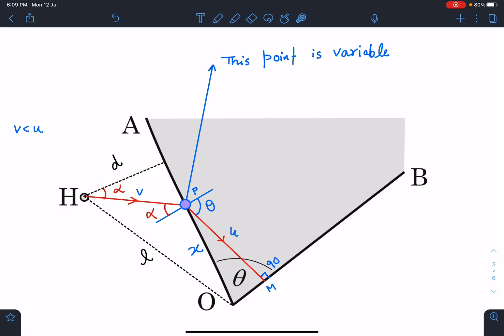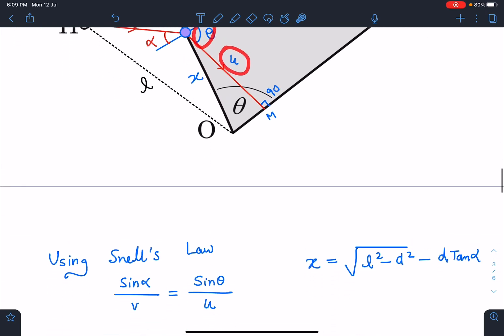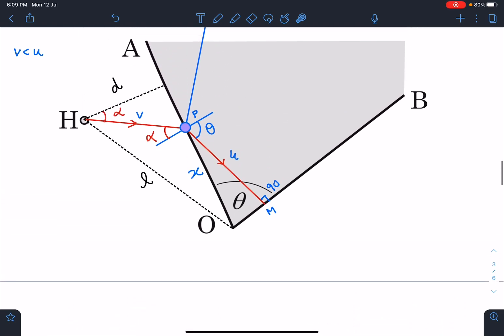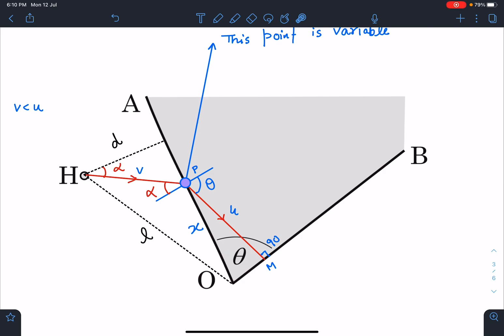Now this variable point P is at a distance x from O. So first thing which we will notice: sin α / v should be equal to sin θ / u. That is the first line I'm going to write: sin α / v = sin θ / u. Another thing is this length x which is variable and it changes with the angle α.